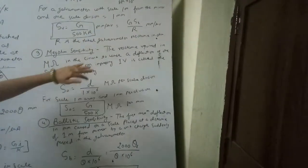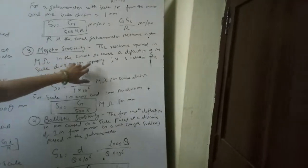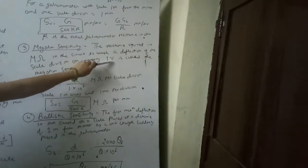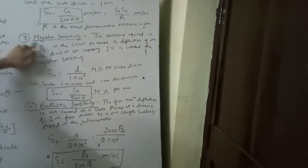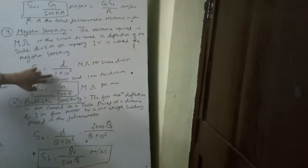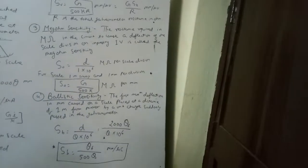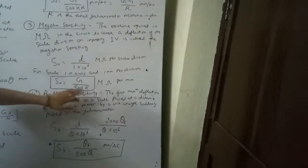The third type is mega ohm sensitivity, S₀, defined as the resistance in mega ohms required in the circuit to cause deflection of one scale division when one volt is applied. For a scale 1 meter away with 1 mm per division, S₀ = G/(500K).